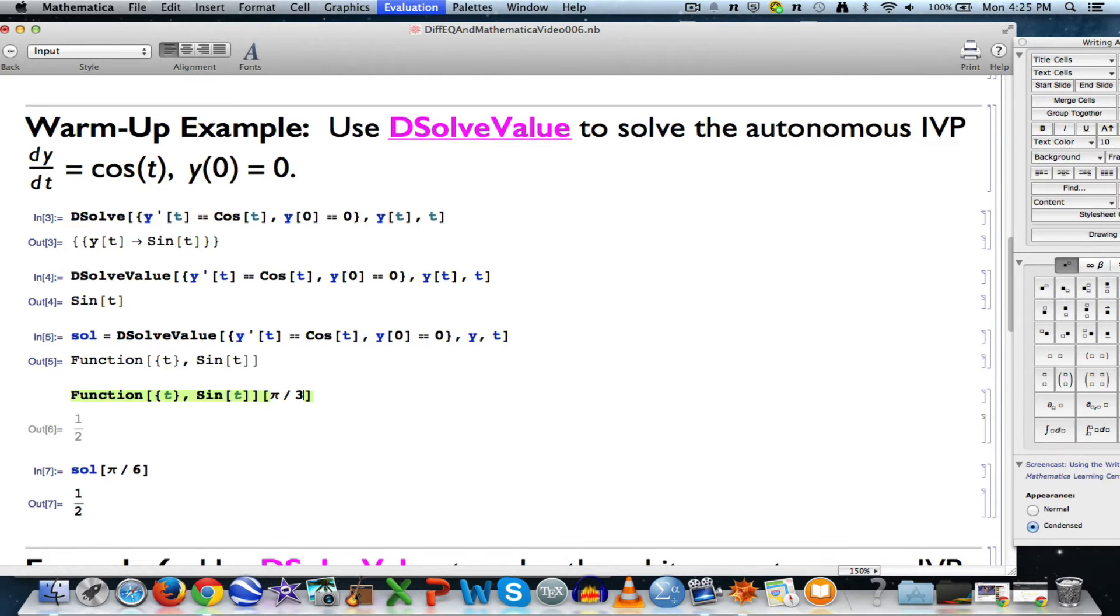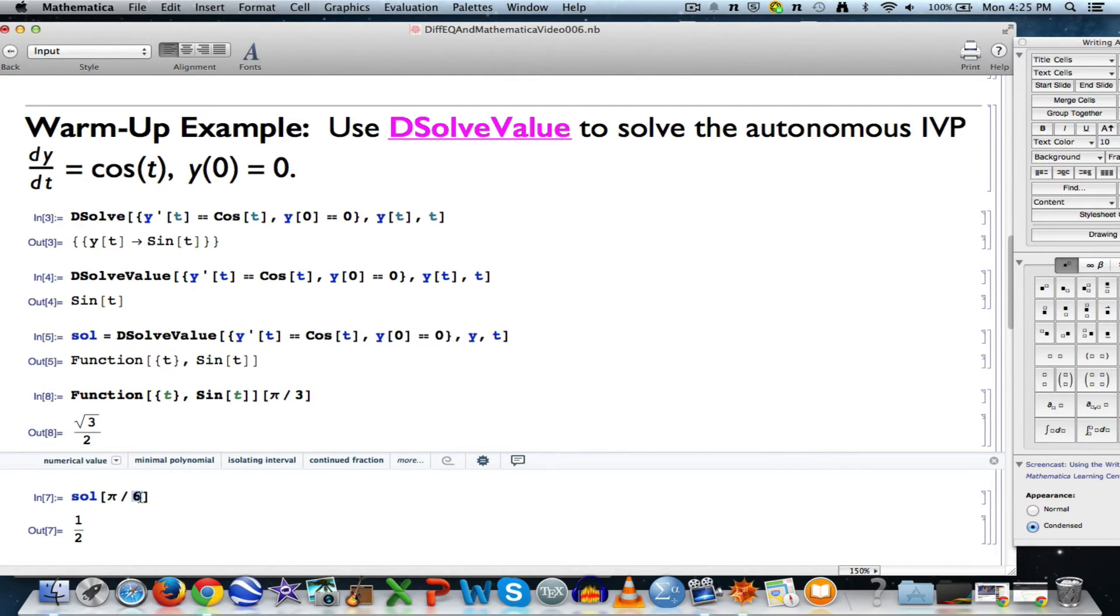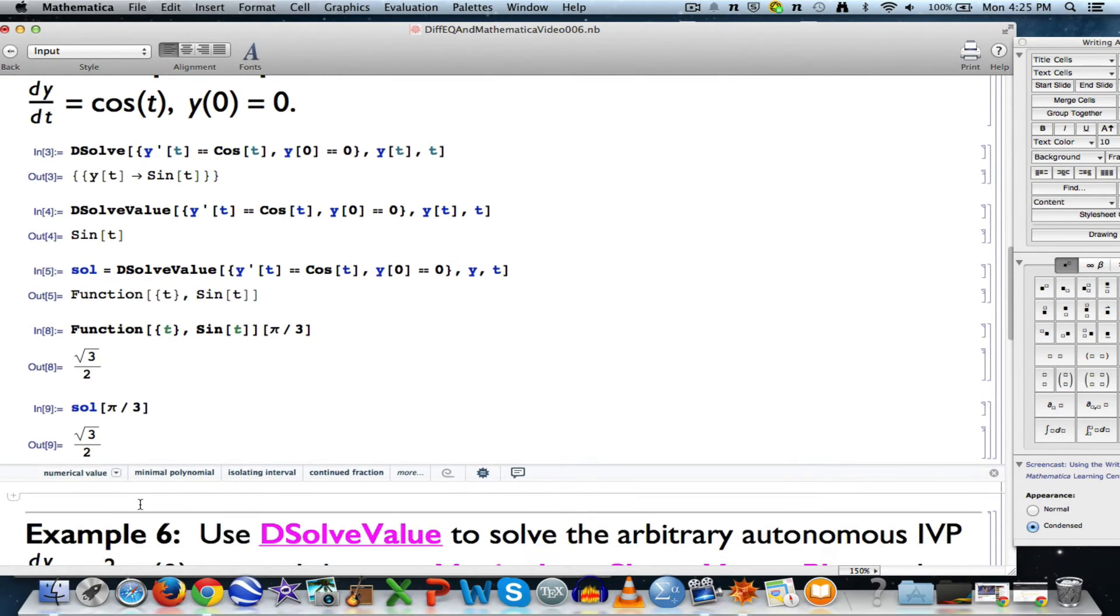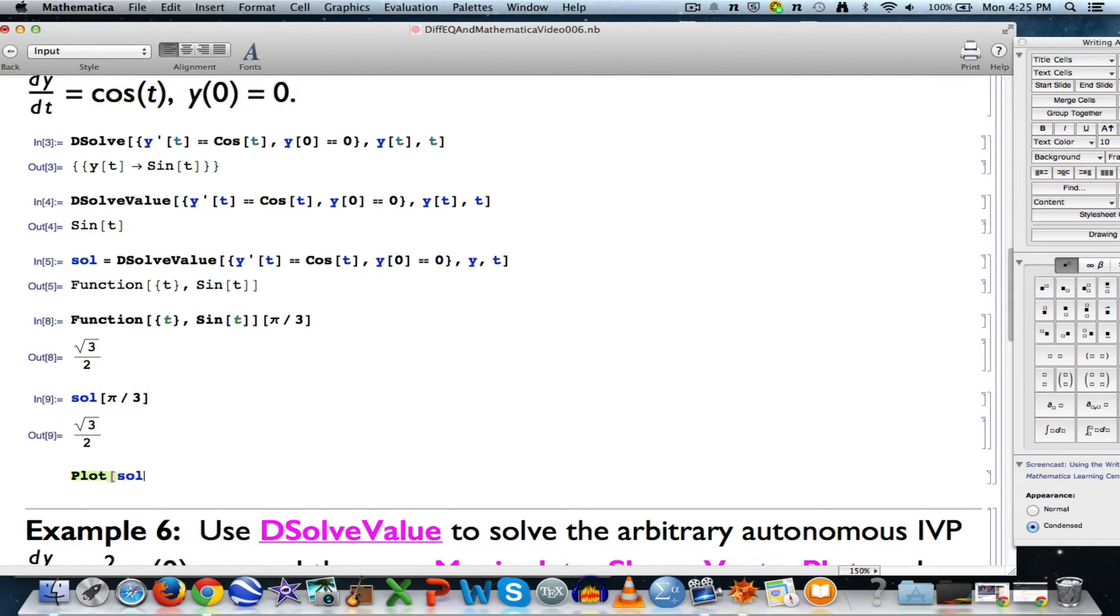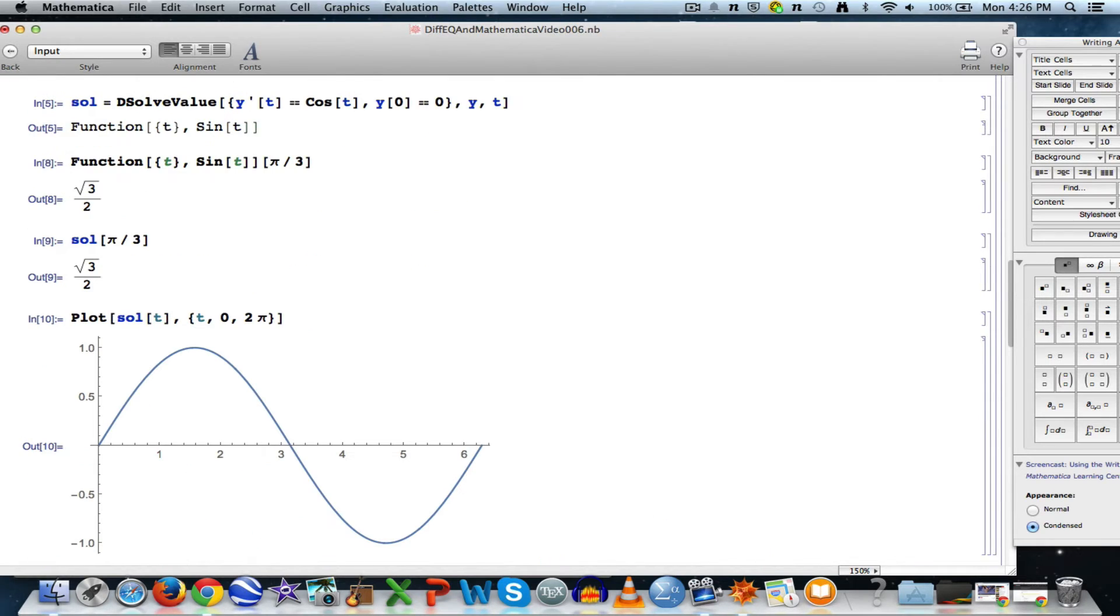I can plug in pi over 3, get the square root of 3 over 2. And I can plot this function, sol of t, keep going, say, from 0 to pi, to plot the sine function.